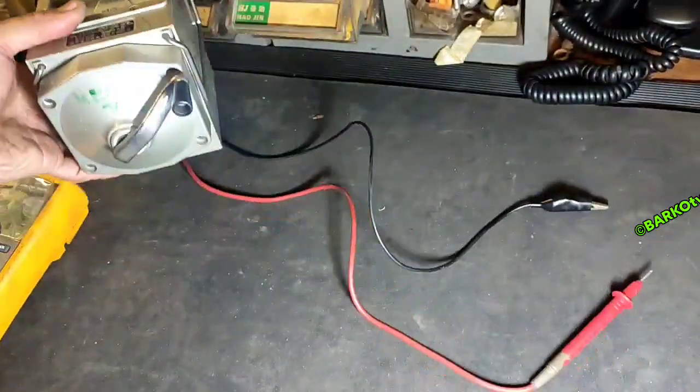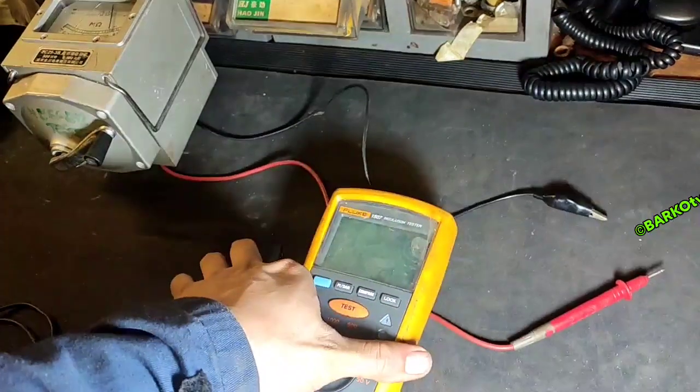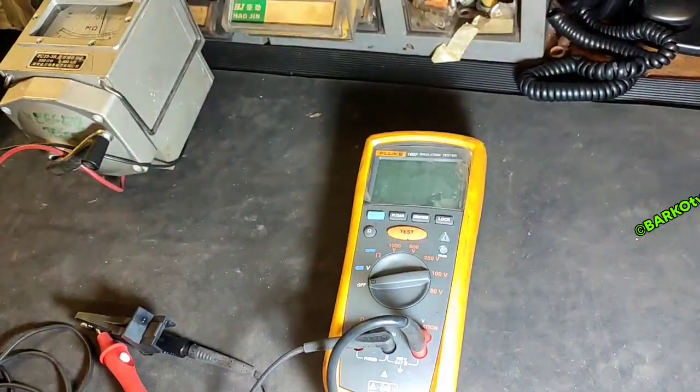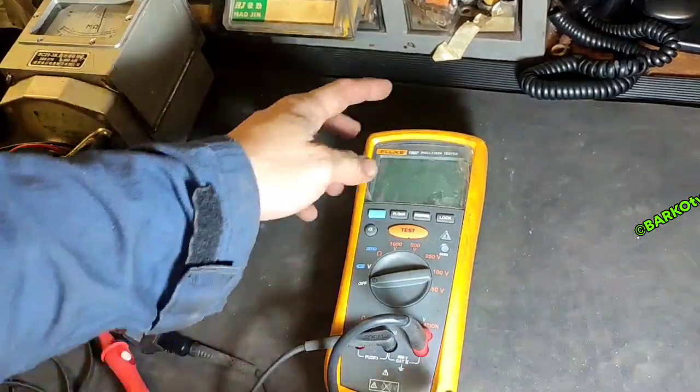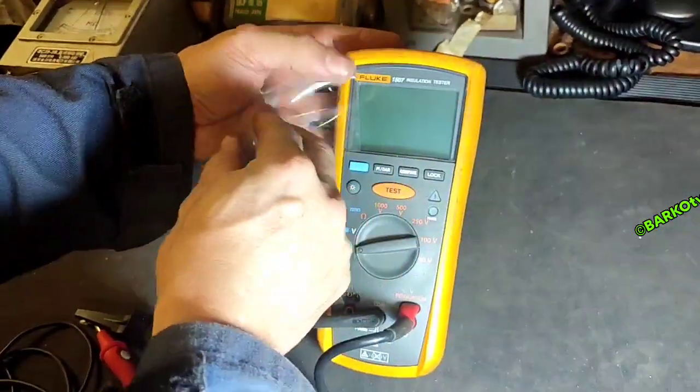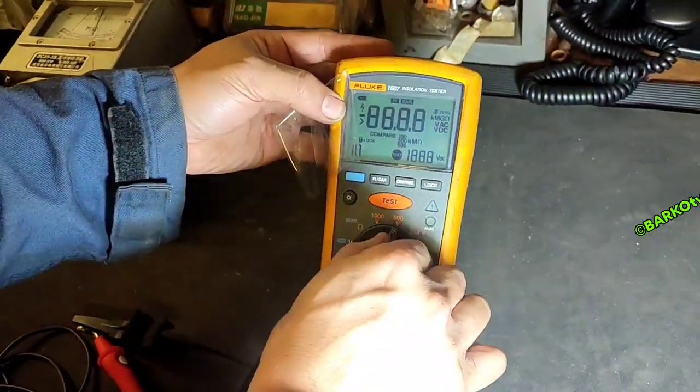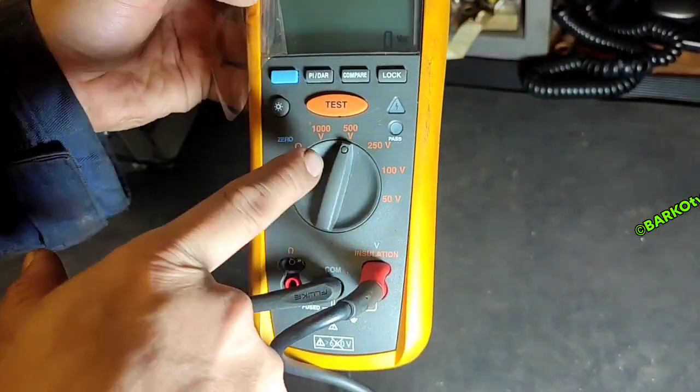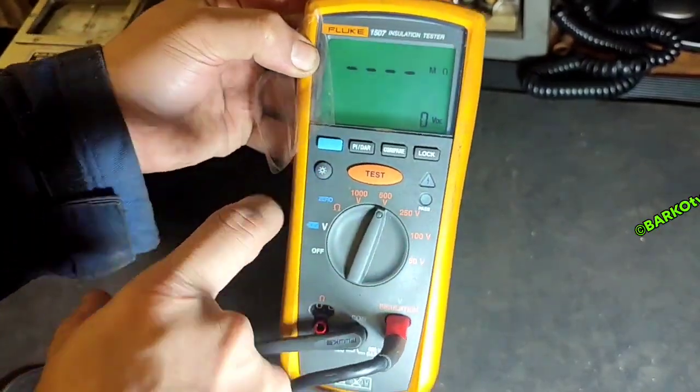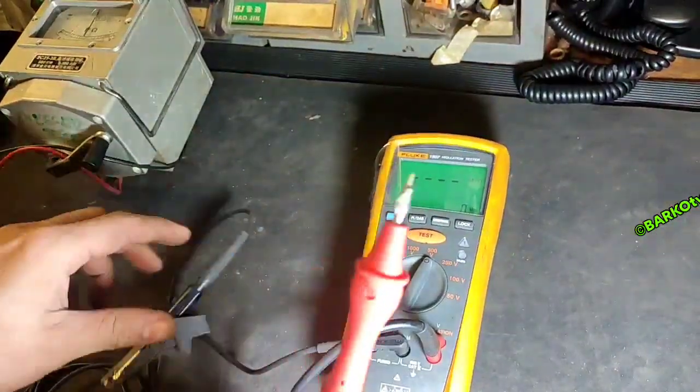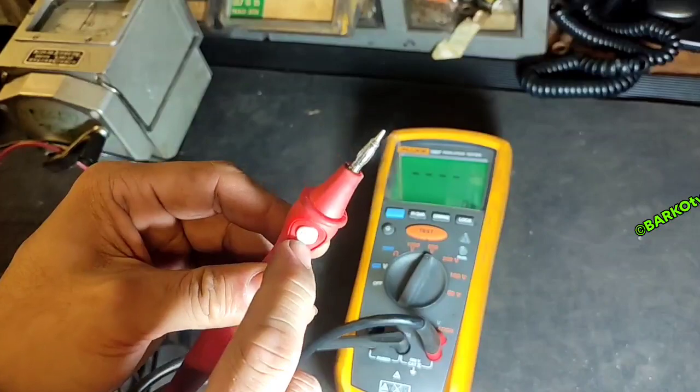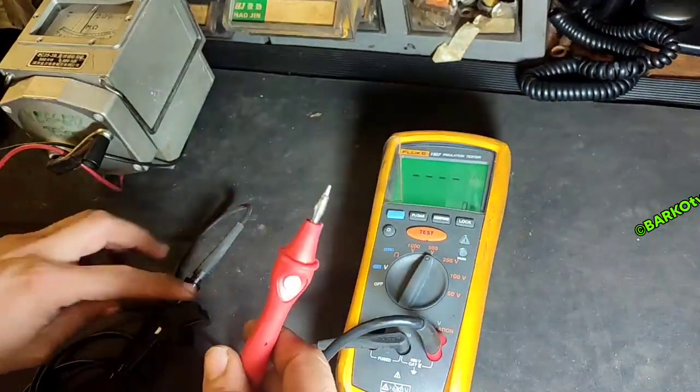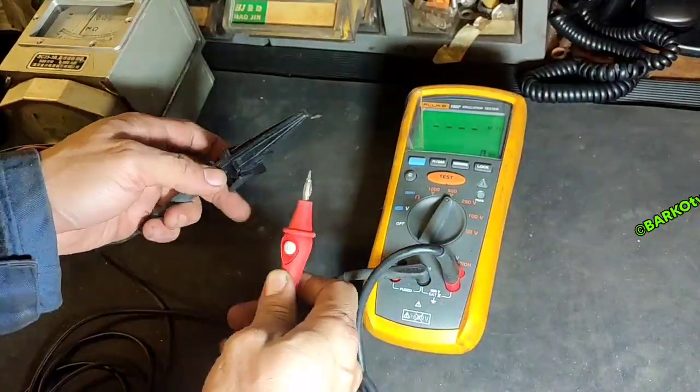Let's go to the Fluke 1507. This is very easy to use. There is a test button at the meter, then ohm-meter, voltmeter - that is the range for our IR test. That is the button at the probe, there is a test, and also at the meter there is a test. That is the same button.